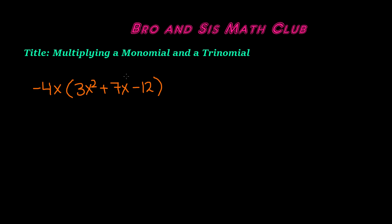A trinomial is basically a sum of three monomials — so it's three terms. Here we have 3x squared plus 7x minus 12 as our trinomial. We will be learning how to multiply this monomial times this trinomial.